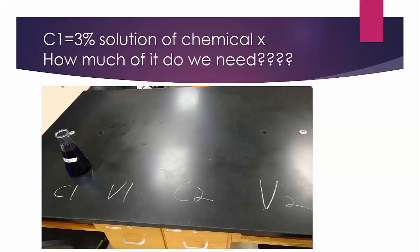What we don't know is how much of it we need. We know we have 950 milliliters, but we don't know how much we actually need to make the dilution. So C1 is 3%, V1 is the unknown variable here.